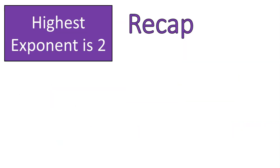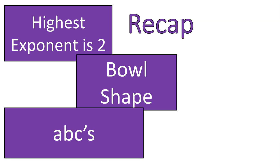All right. Quick recap. The highest exponent is 2. And it always has to be equal to exactly 2, our highest exponent. It is a bowl shape, and you've got to remember those ABCs because they're going to move that parabolic curve and change its shape.